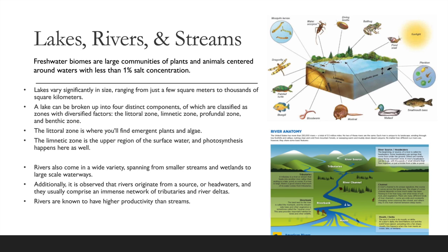The four lake zones are the littoral zone, limnetic zone, profundal zone, and benthic zone. The benthic zone is the bottom zone. The littoral zone is where you'll find emergent plants and algae. The limnetic zone is the upper region of the surface water, where photosynthesis also happens.